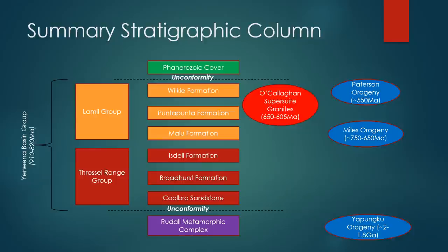Specifically, we're now going to focus on the Lammel Group, the Miles Orogeny, and the O'Callaghan Super Suite. We're only really interested in this red box that I've highlighted here — we're not really interested in anything outside of that.